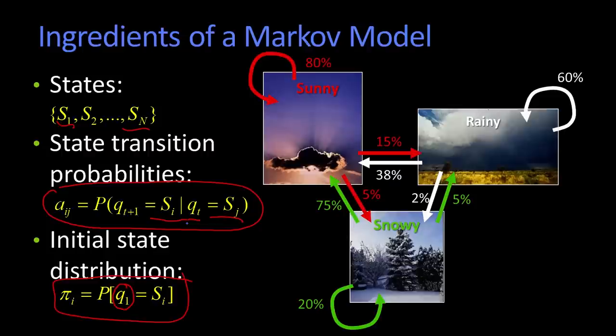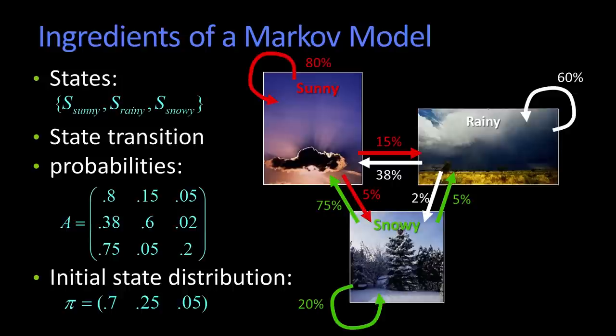So for this particular example, as I showed you here, you've got three states, sunny, rainy, and snowy. We've got these state transition probabilities. So this matrix A, that's the encoding of all of these links, of all of these transition values. And then I have an initial distribution, which just says, well, to start off with,